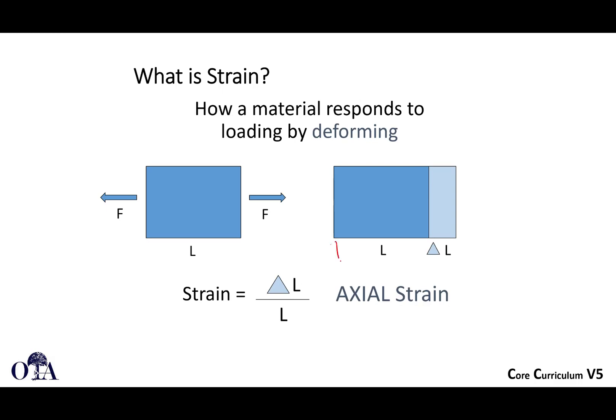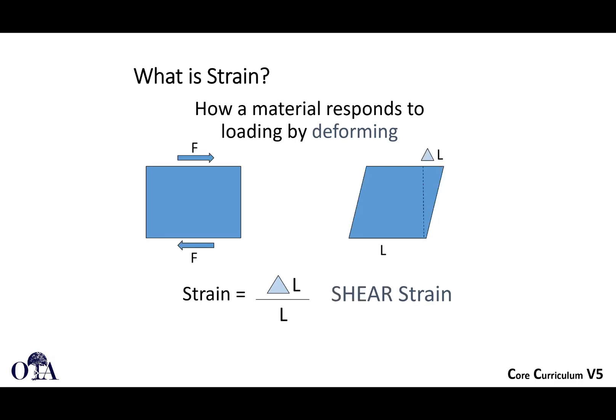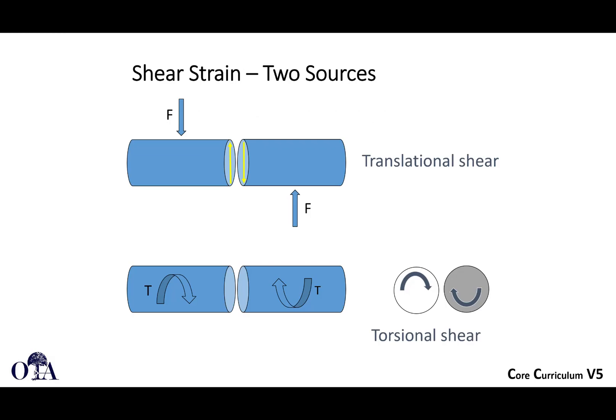You can also have shear strain: by applying shear forces, that change in length over the length is your shear strain. Shear strain can occur from both translation and torsional forces. You can see translational strain in a fracture that lacks adequate stability, and torsional strain in an unlocked intramedullary fixation of a diaphyseal fracture — which can lead to a hypertrophic non-union.